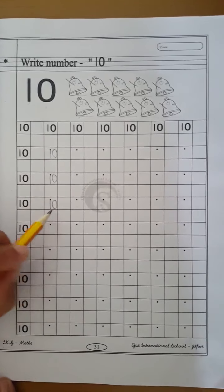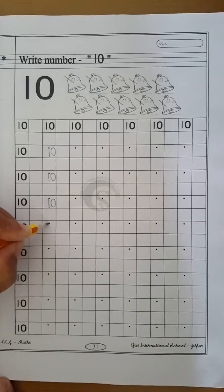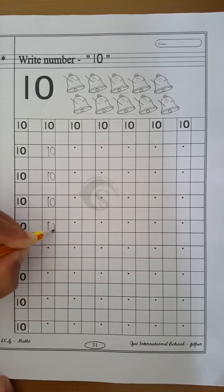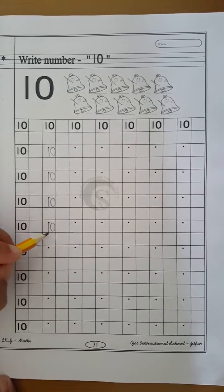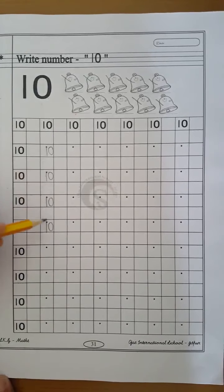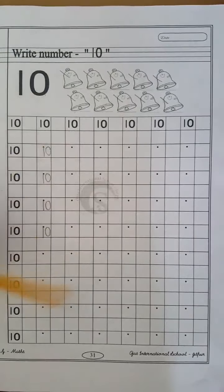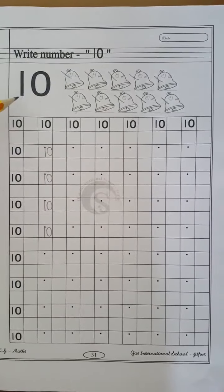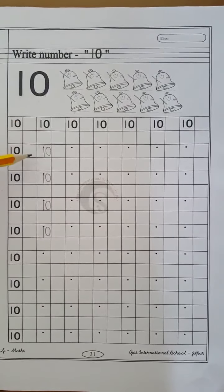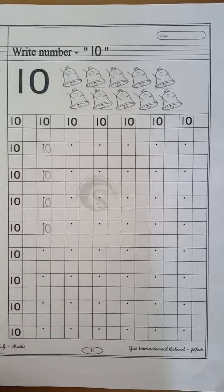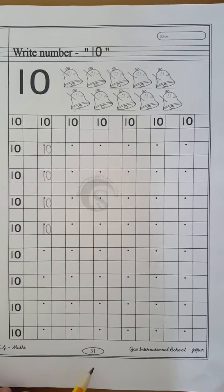Children, whenever you write number 10, speak and write 1, 0, 10. And leave one box. Children, now in this way you have to write number 1, 0, 10 in your maths book, page number 31. Thank you.